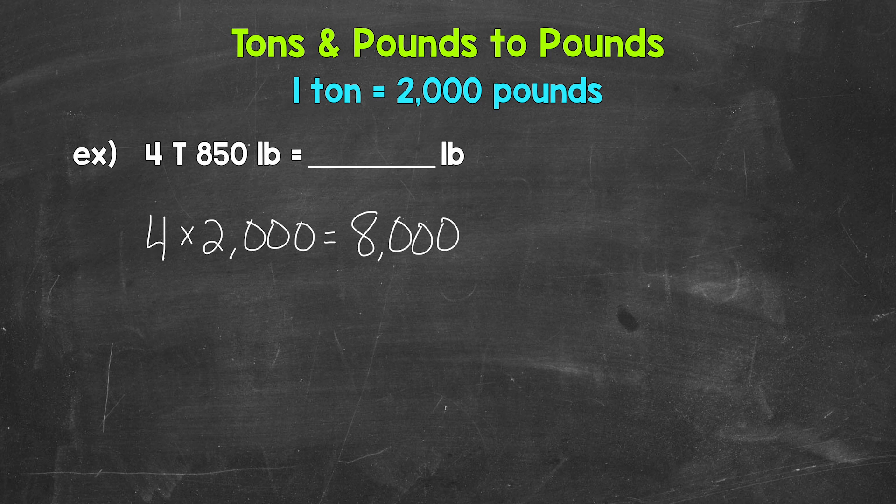So 4 tons equals 8,000 pounds. Now we need to add 850 pounds to that. We're combining 8,000 pounds and 850 pounds to see how many total pounds we have.